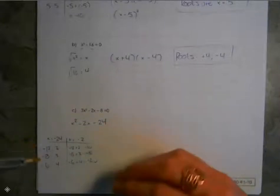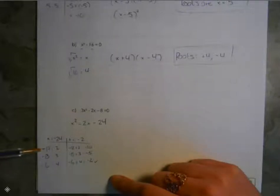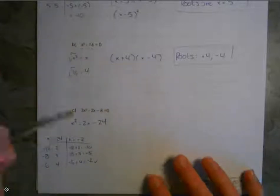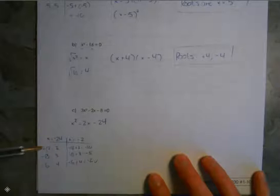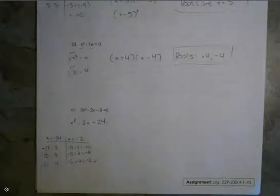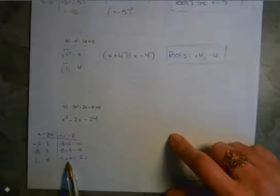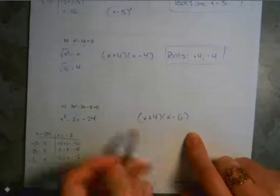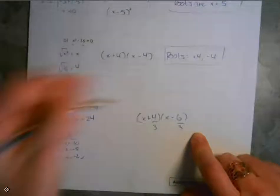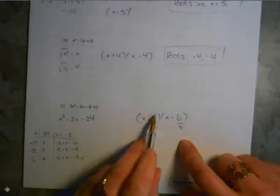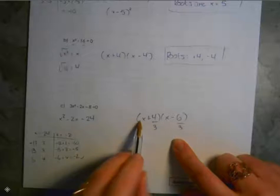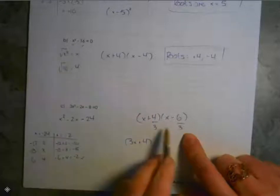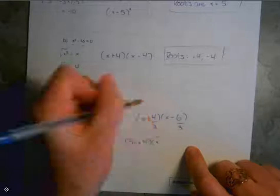A useful tip: when looking for a negative result, the bigger value has to be assigned the negative. That saves time over trying both ways for every pair. So our numbers are negative 6 and positive 4, giving brackets x plus 4 and x minus 6. Now divide the 3 back out: 4 divided by 3 doesn't give a whole number, so the 3 swings up in front of the x — giving 3x plus 4. For the other bracket, 6 divided by 3 is 2, a whole number, so it's just x minus 2.